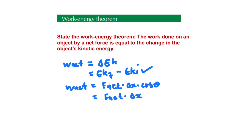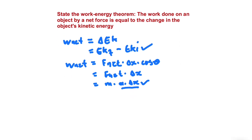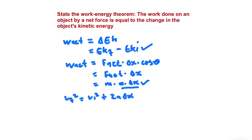From Newton's second law, we know that F_net equals m multiplied by acceleration, so we have m·a·Δx. Now we need to go from this equation to net work equaling the object's change in kinetic energy. We concentrate on the a·Δx term — we just need one more equation to prove this theorem. From equations of motion, we know that v_f² = v_i² + 2a·Δx, here along the horizontal axis (or Δy for vertical).